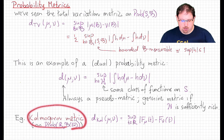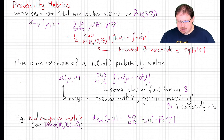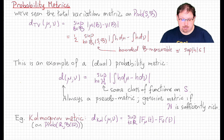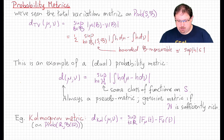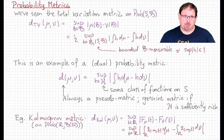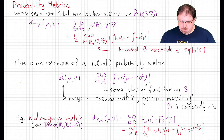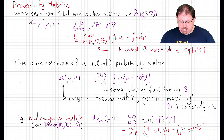Here is an example: the Kolmogorov metric, which is a metric on probability measures on the real line. The Kolmogorov distance between two measures is the supremum of the difference between their CDFs. In other words, it's equal to the dual metric generated by all functions of the form — indicator of a half-infinite interval from minus infinity up to t — taking the supremum over all real numbers t. This seems like a pretty small class of functions; it's just a one-parameter set, but it turns out to be strong enough to make this into a metric.